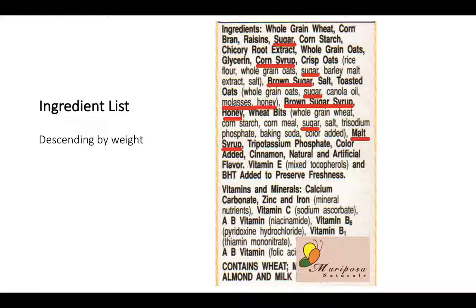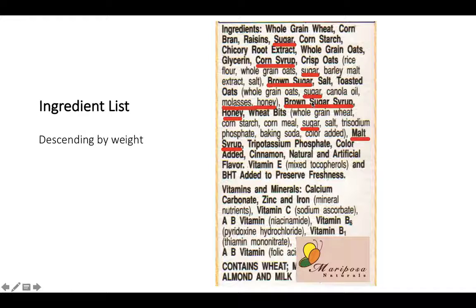The ingredient list can be one of the best resources on the nutrition facts panel. Ingredients are listed in order by descending weight, so in this product, whole grain wheat is the most by weight compared to corn bran, raisins, or sugar. Each red line here represents an added sugar. When using the old food label, you have to look at the ingredient list to determine how much sugar is added versus naturally occurring — we want naturally occurring sugars but want to limit added sugars.